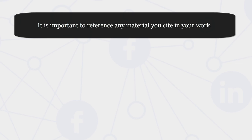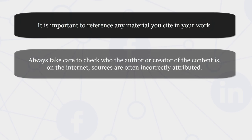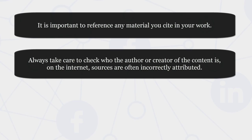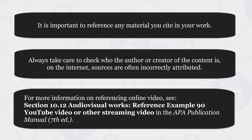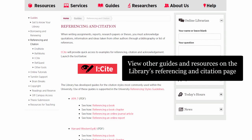It is important to reference any material you cite in your work. Always take care to check who the author or creator of the content is — on the internet, sources are often incorrectly attributed. For more information on referencing online video, see section 10.12 audiovisual works, reference example 90, YouTube video or other streaming video in the APA Publication Manual, 7th edition. View other guides and resources on the library's referencing and citation page. For more information, please contact the library.